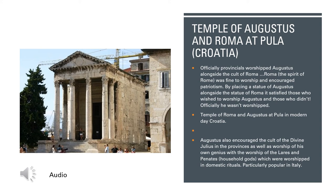The Temple of Roma and Augustus is found at Pula in modern-day Croatia. He also encourages the Cult of the Divine Julius in the provinces, as well as the worship of his own genius alongside the worship of the Lares and the Penates — the household gods — those household gods which had been taken by Aeneas from a burning Troy. The Penates were worshipped in domestic rituals in every house right across the Empire. So if Aeneas, Augustus's ancestor, was meant to have provided every house with their household gods, the Penates, it's not surprising that Augustus would be associated with the provision of divinity as well.